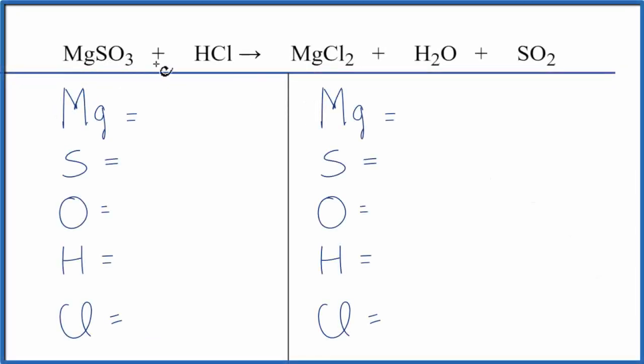In this equation we have MgSO3 plus HCl, magnesium sulfite plus hydrochloric acid.